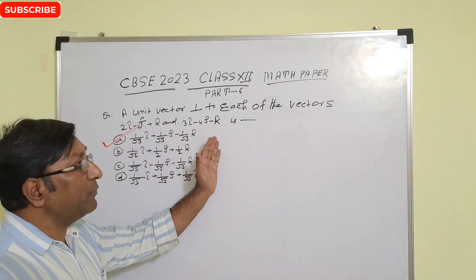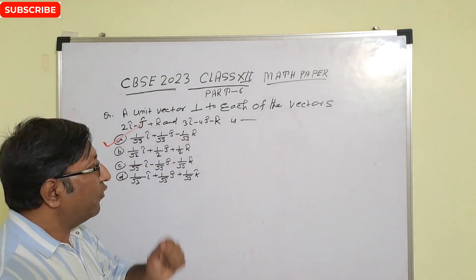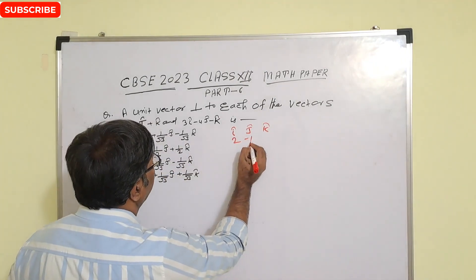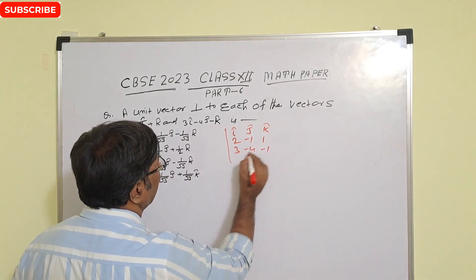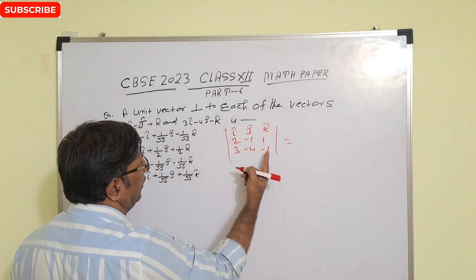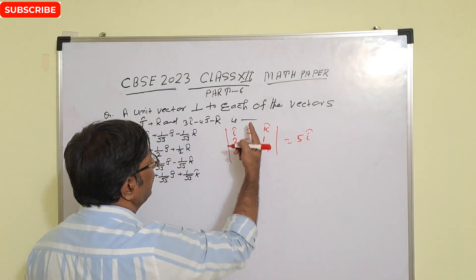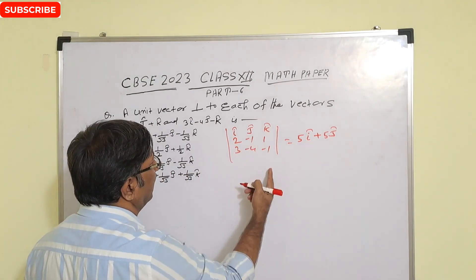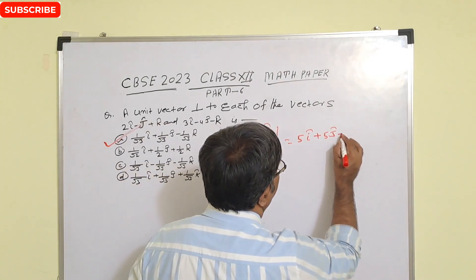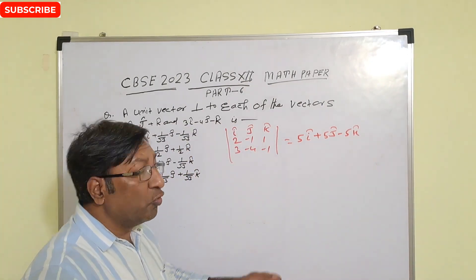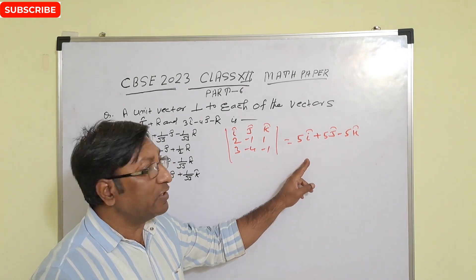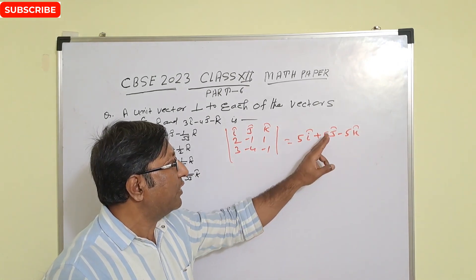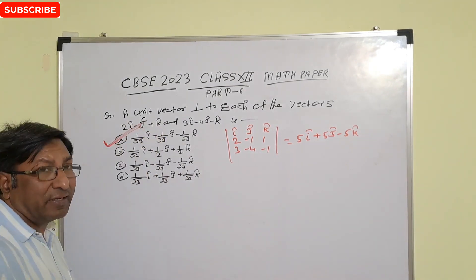Find a unit vector perpendicular to each of two given vectors. First compute the cross product using the determinant with rows i, j, k then (2, -1, 1) then (3, -4, -1). The i-component is (-1×-1) - (1×-4) = 1+4 = 5; the j-component is -(2×-1 - 1×3) = -(-2-3) = 5; the k-component is (2×-4 - (-1)×3) = -8+3 = -5. Magnitude is root(25+25+25) = 5√3. Dividing by 5√3, the unit vector is (1/√3)i + (1/√3)j - (1/√3)k.